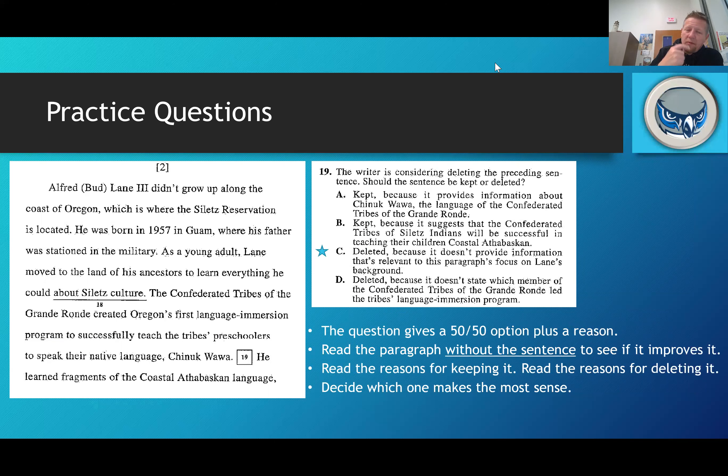Okay, so we have to look down here at the box that says 19 because question 19 will align with box 19. What it's asking for is for you to look at this sentence right here. The Confederated Tribes of the Grande Ronde created Oregon's first language immersion program to successfully teach the tribe's preschoolers to speak their native language Chinook Wawa. The writer is considering deleting the preceding sentence. Should the sentence be kept or deleted?